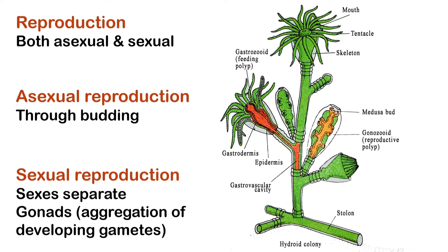The bud separates from the parent, or in colonial species may remain attached as a new individual of the colony. Thus a proper colony is formed which has a common gastrovascular cavity.